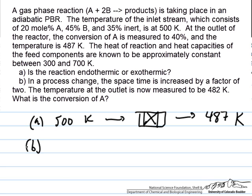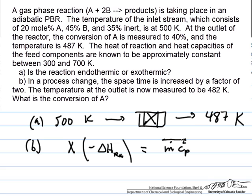Part B is more interesting. We can write a general energy balance for this system in a simplified form: the fractional conversion times the heat of reaction is equal to ṁCp — an average heat capacity on a mass basis times the mass flow rate of all the inlet material. This basically tells us that the heat capacity of the components doesn't really change with reaction, and the heat of reaction is constant with temperature, so the heat capacity of the mixture doesn't change with reaction.